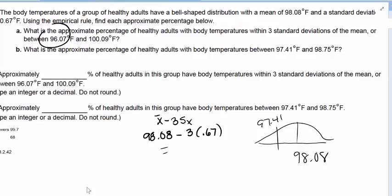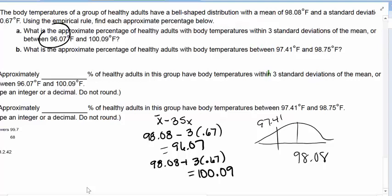96.07 is three standard deviations below the mean, and 98.08 plus three standard deviations is going to give us, if we type that into our calculator, 100.09. So we've concluded, well, we've verified that these are three standard deviations away.